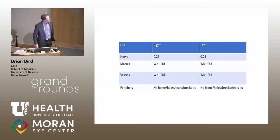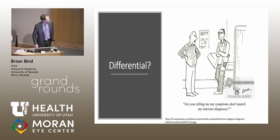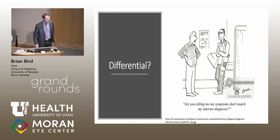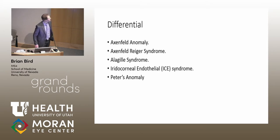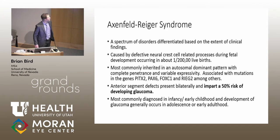Going through the back of the eye was pretty normal as well. So if you think to yourself: posterior embryotoxon plus these PAS — what could the diagnosis be? You can think of a few of them. As listed here, Axenfeld anomaly was actually the diagnosis for our patient.